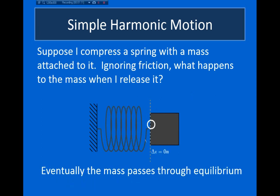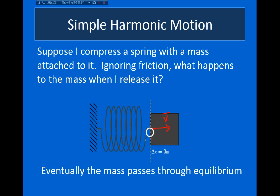Eventually, the mass will return back to its equilibrium position. But at this point, the mass is now moving to the right, so the mass has a very large velocity that points to the right. As a result, even though there's no net force on the mass when it reaches equilibrium, because the mass is now moving to the right, it will move past its equilibrium position.